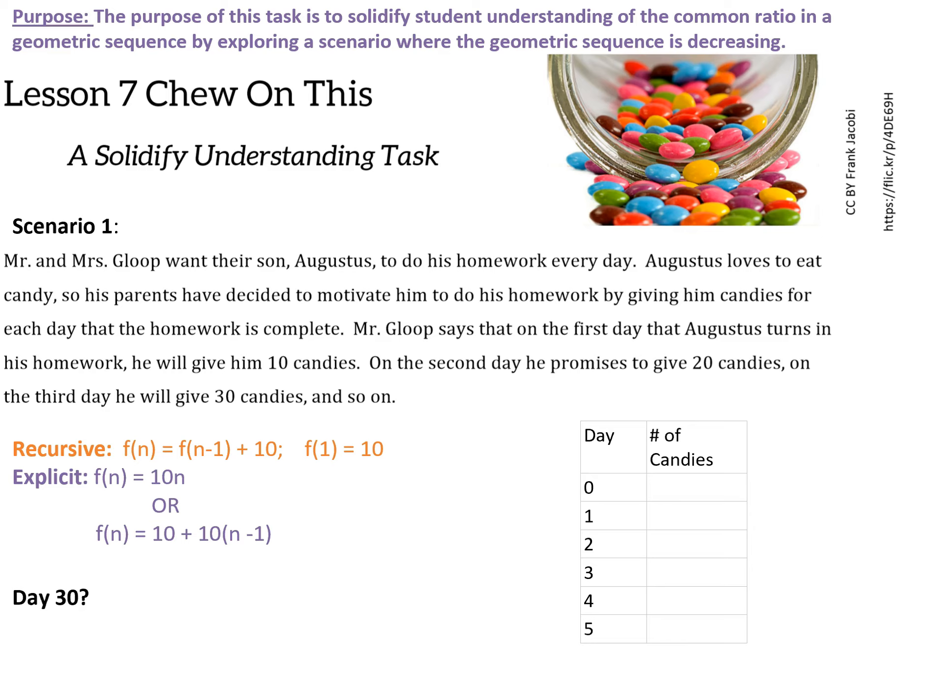So scenario one, we have Mr. and Mrs. Gloop. They're giving Augustus ten candies every day as incentive to do his homework. On day zero he doesn't have any candy, but the first day he does his homework he gets ten, and then each day after that he gets ten more. So on day two he gets 20, on day three he gets 30, on day four he gets 40, and on day five he gets 50 candies.